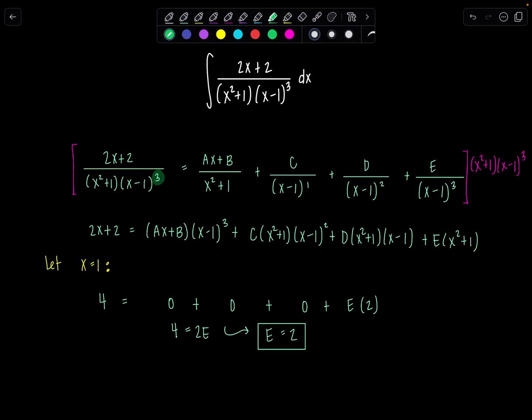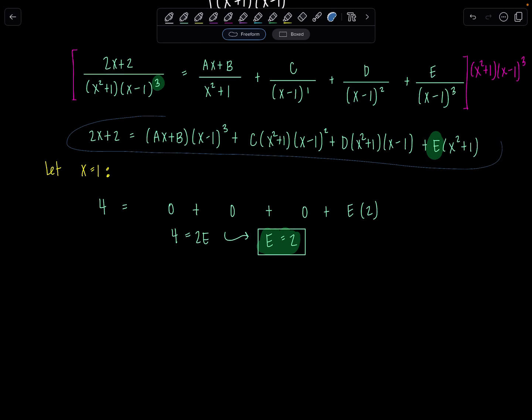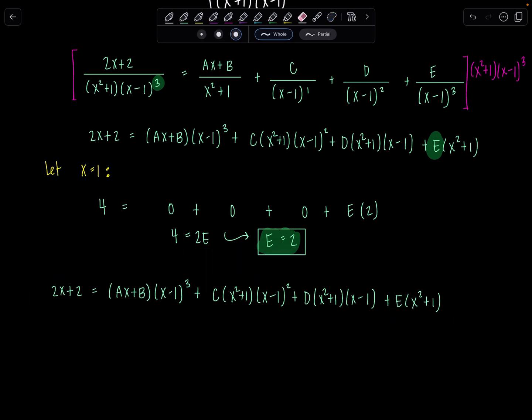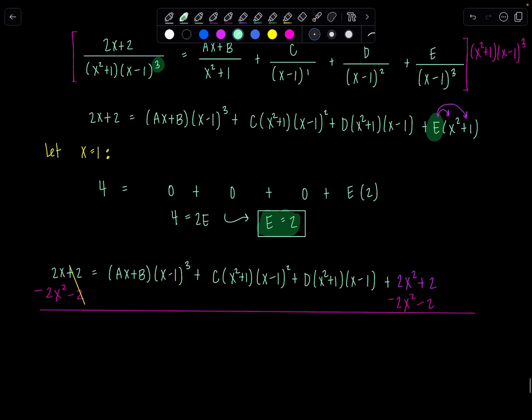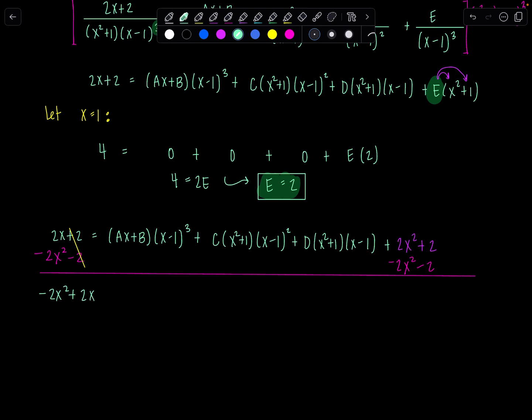So what to do? This is the interesting little maneuver. Now that I know e is 2, I'm actually going to go back and substitute it in right up there. So now that I know e is 2, I have over here 2x squared plus 2 if I were to distribute it through. I want you to move those terms to the other side. So subtract 2x squared, subtract 2. And then let's see what we're left with. These 2s will cancel out. And I have negative 2x squared plus 2x equals all of this stuff.